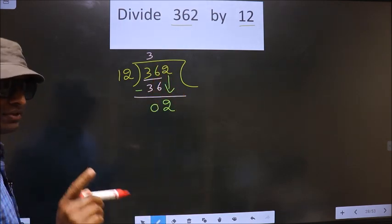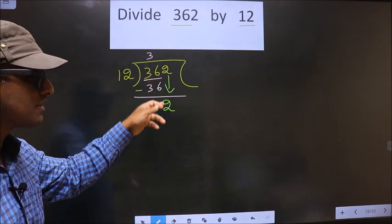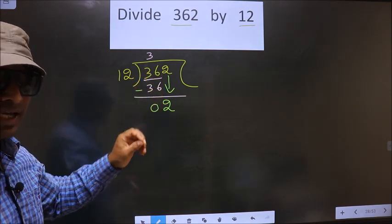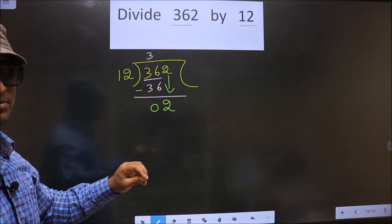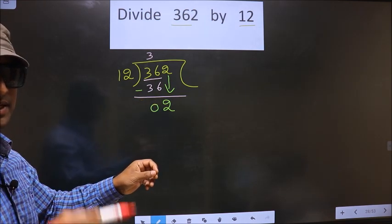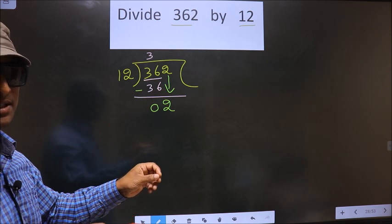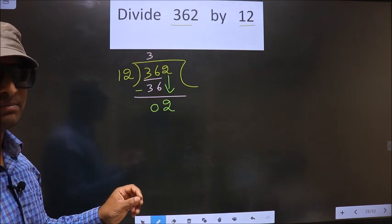Just now you brought this number down, and in the same step you want to put a dot and take zero. I repeat: just now you brought a number down, and in the same step you want to put a dot and take zero, which is wrong. Both of these should not happen at the same step.